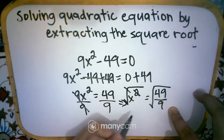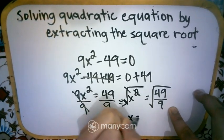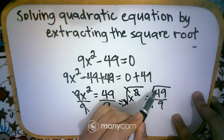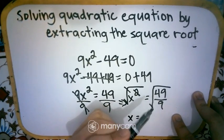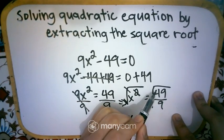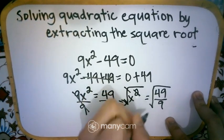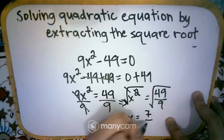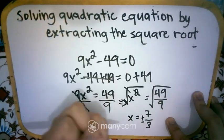So cancel. So it becomes x. So to get the square root of a fraction, get the square root first of the numerator and then after that, get the square root of the denominator. So the square root of 49 is 7 and the square root of 9 is 3. And don't forget to write positive negative.